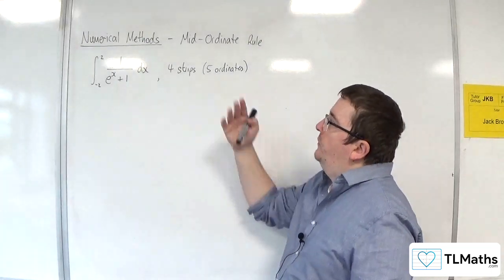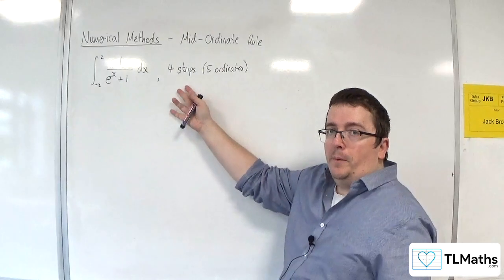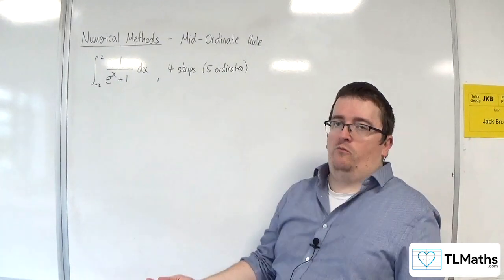These two things mean the same. So you'll always have one more ordinate than strip, just like it is with the trapezium rule.